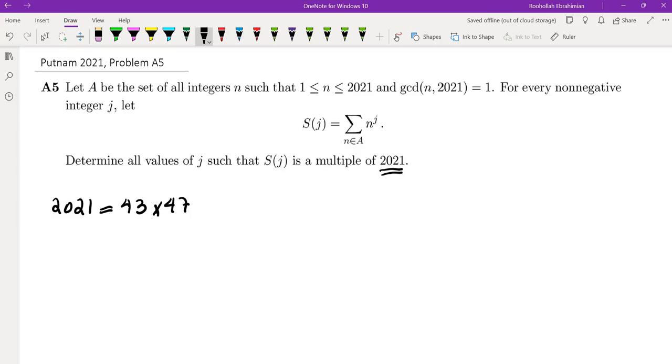So what does it mean that S(J) is divisible by this? It means 43 must divide S(J) and 47 must also divide S(J). This is what we need.